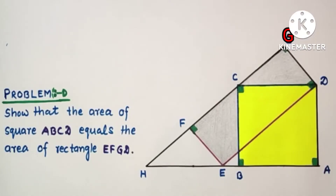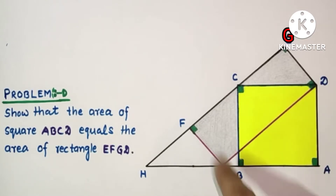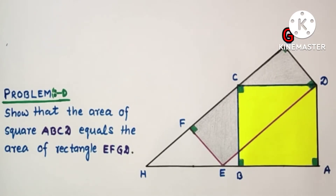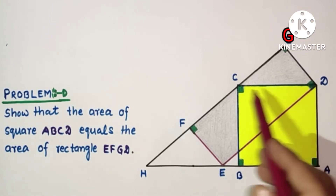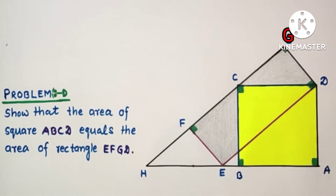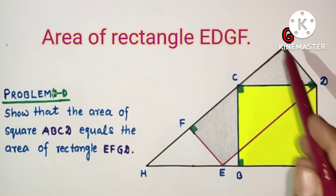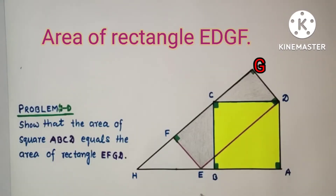Hi guys and respected viewers, welcome once again. In today's video we will discuss a very interesting ninth grade area problem. We are given a diagram — ABCD is a square, EDCF is a rectangle — and we have to show that the area of this yellow square is equal to the area of rectangle EDCF.